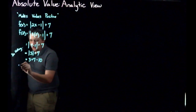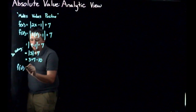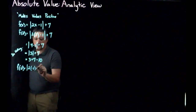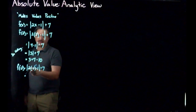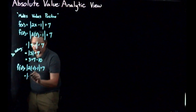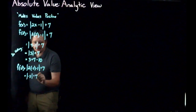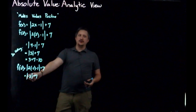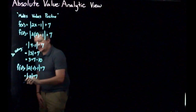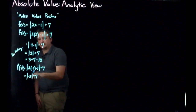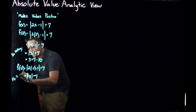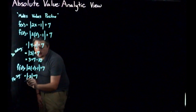In contrast, if I look at f(negative 2), I do the same steps. That's 2 times negative 2 minus 1 plus 7. Two times negative 2 is negative 4, minus 1 is negative 5. So I have absolute value of negative 5 plus 7. Here, the absolute values aren't doing nothing — they need to make negative 5 positive. So I flip the sign, which gives me 5 plus 7, which gives me 12.